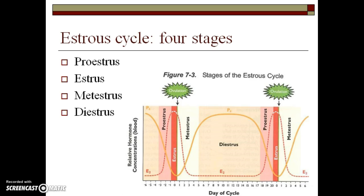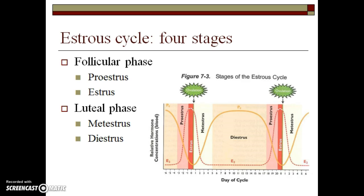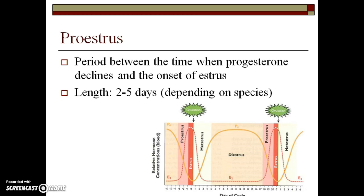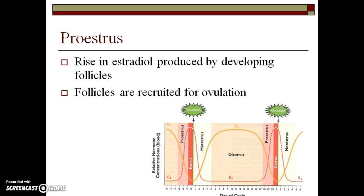Proestrus is the period between the time the corpus luteum regresses and the onset of estrous. Depending on the species, an animal can be in proestrus anywhere from two to five days. During proestrus, the developing follicles are secreting estradiol and a select number of these follicles are then recruited for ovulation.